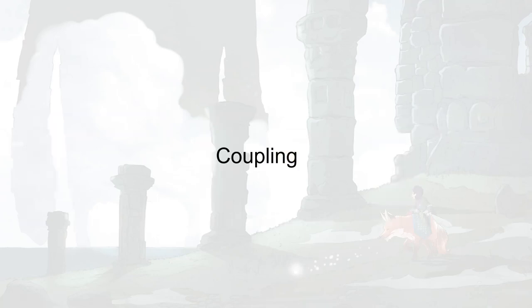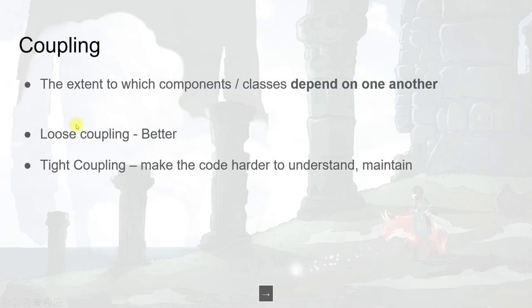The next concept is coupling. Coupling means the extent to which components or classes depend on one another — it's like connections between classes. Loose coupling is better, and tight coupling makes the code harder to understand and maintain, so we should always try to have loose coupling between classes.